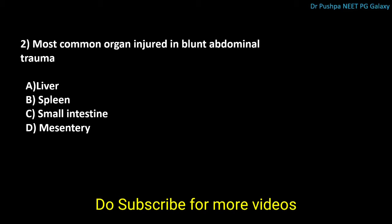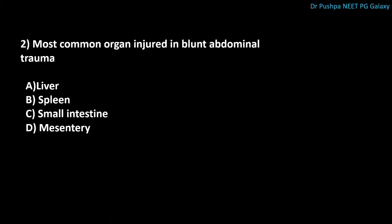The second question is: most common organ injured in blunt abdominal trauma. Option A: liver. Option B: spleen. Option C: small intestine. Option D: mesentery. The correct answer is spleen — this is the most common organ injured in blunt abdominal trauma.